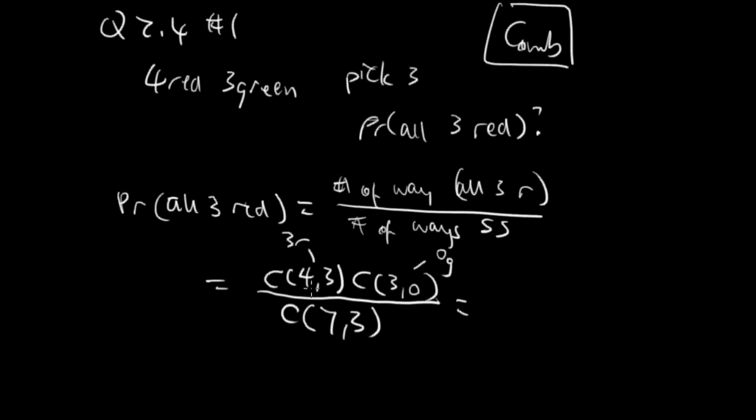And then now we just do the math. Anything choose zero is one, so you can ignore that. So here's four. And seven choose three—we use seven times six times five over three times two times one. And we have bottom is 35 and four over 35 is our answer.